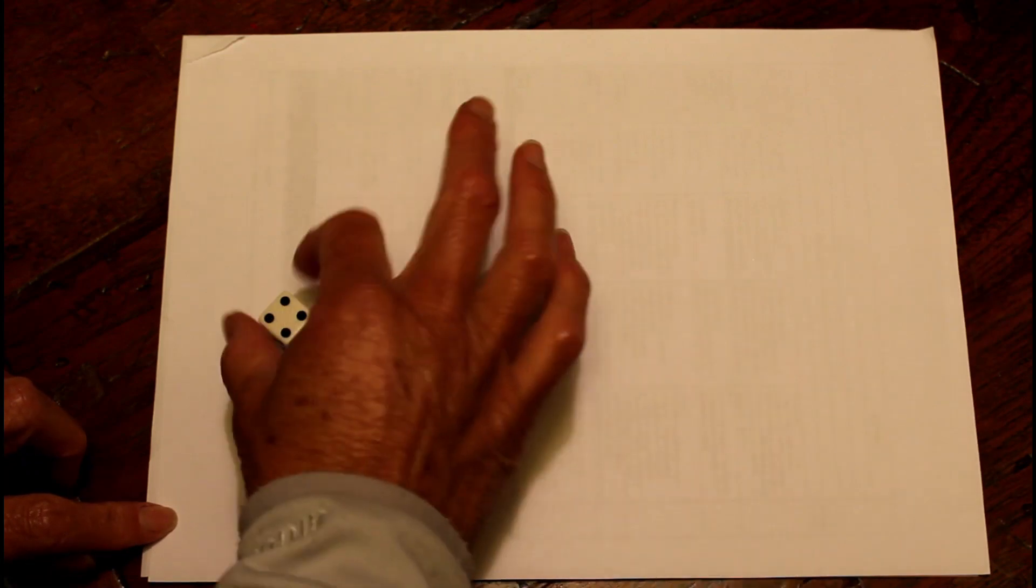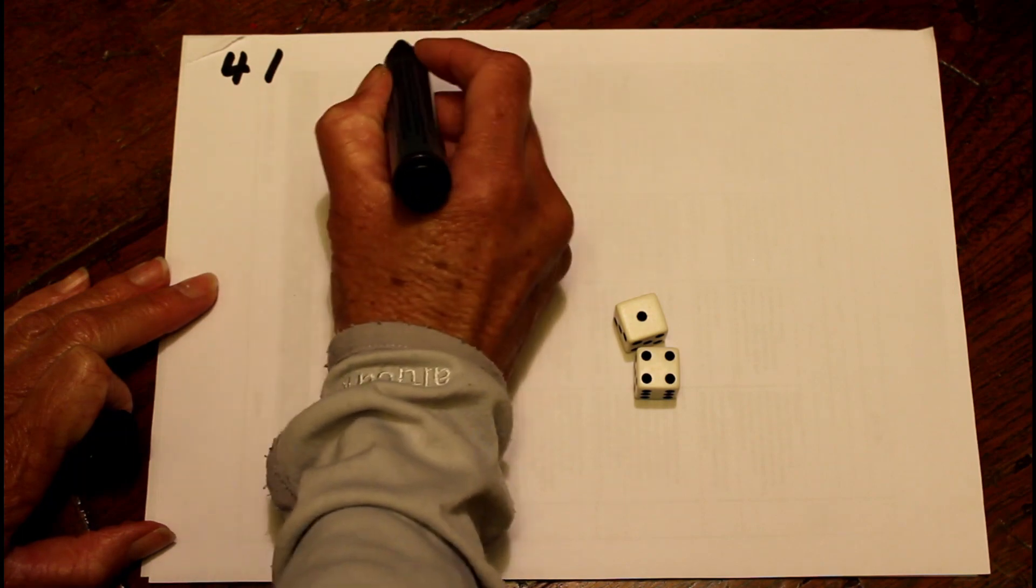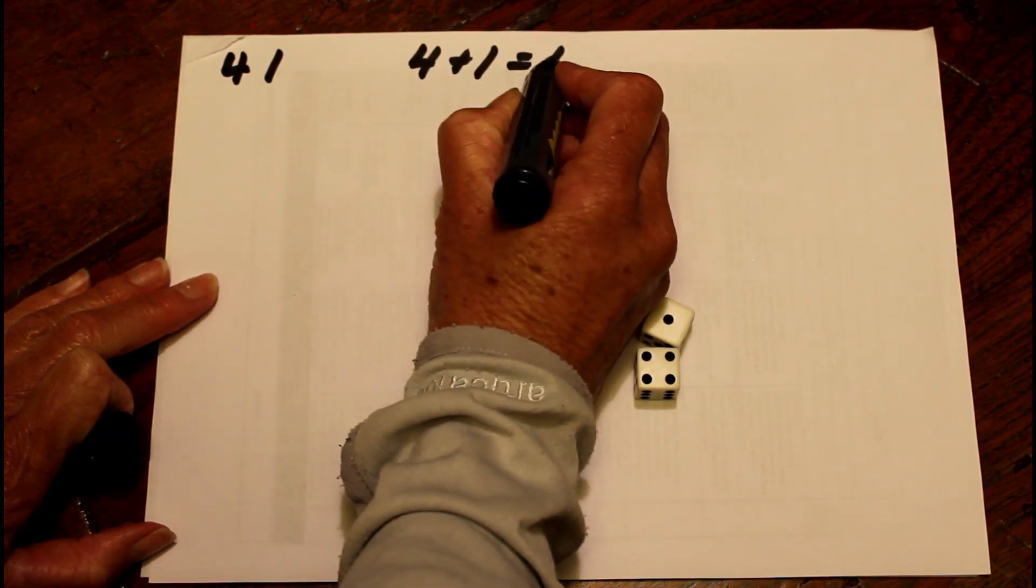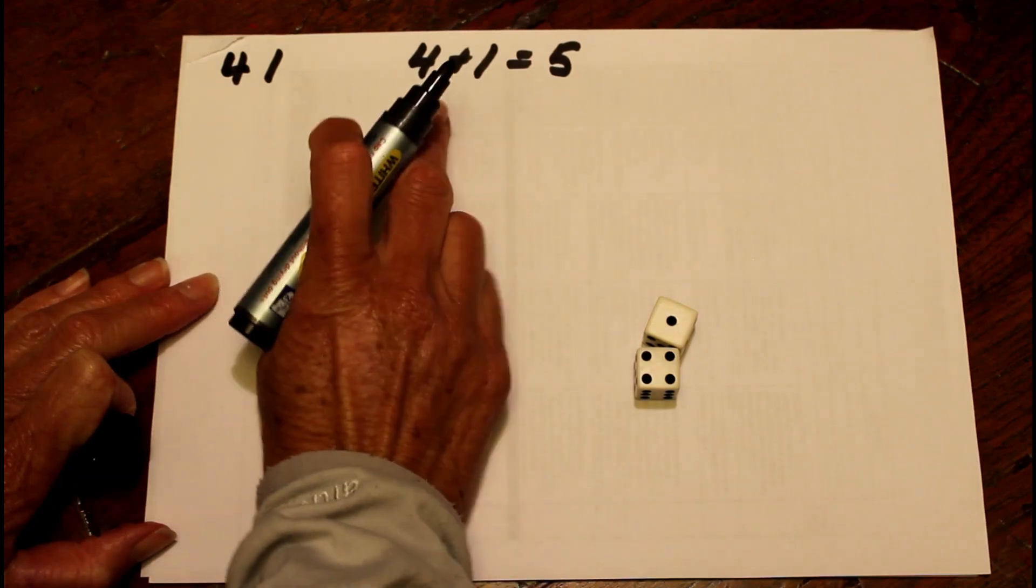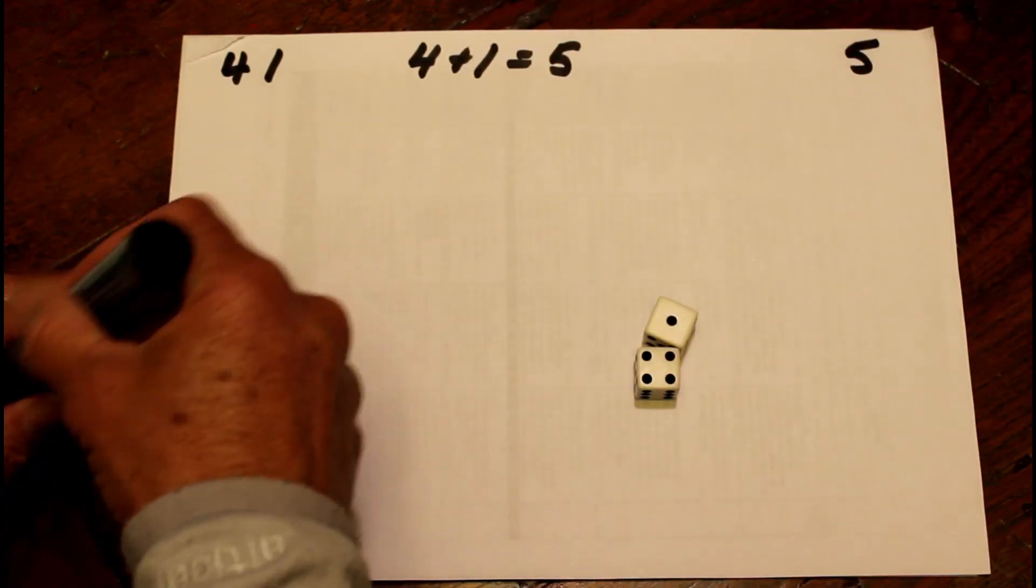So I'm going to throw the dice. I can see that I've got 4 and 1. I'm actually going to do 4 plus 1 at this stage because it's going to give me more than 4 times 1. So my running total to start is 5.